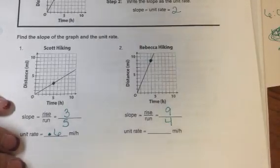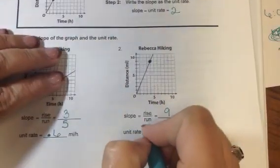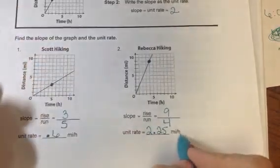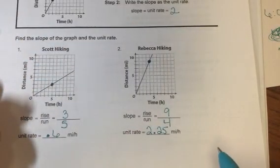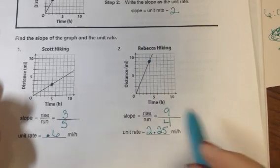Same thing when I divide that out. 9 divided by 4 equals 2.25. So in one hour, she is at 2.25 miles. She's going 2.25 miles per hour. That is our unit rate.